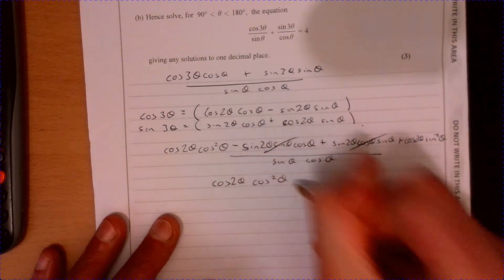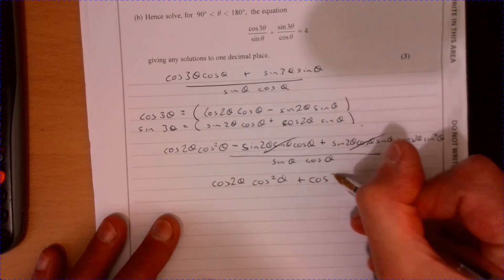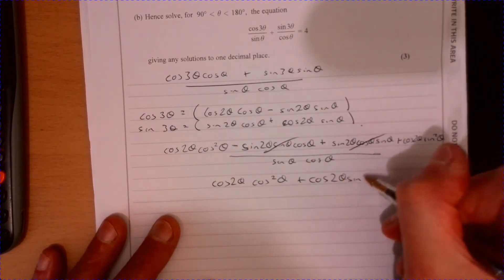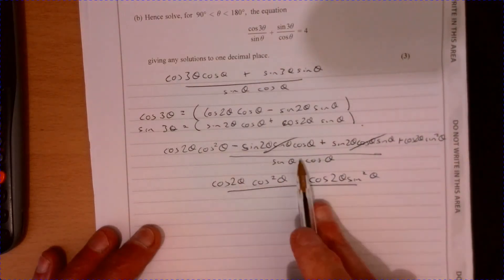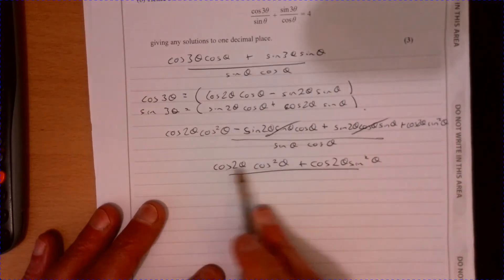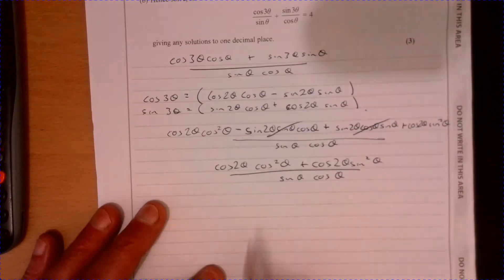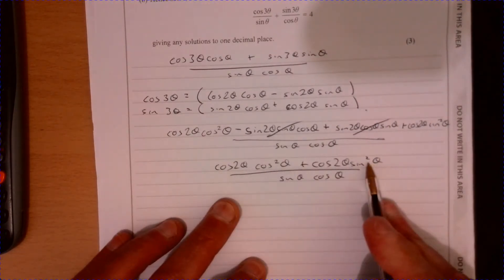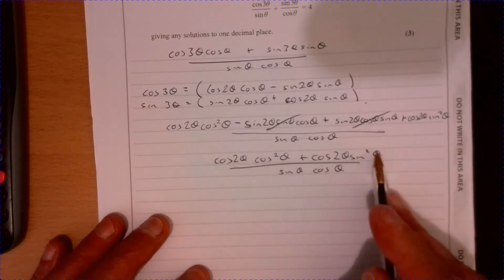So cos 2θ, let's write this down quickly: cos 2θ cos squared θ plus—now look how this all just drops out really neatly. In the middle of writing that, I didn't know where this was going, but look at this: sine θ cos θ. Cos squared plus sine squared, there's a clue, it's equal to one.